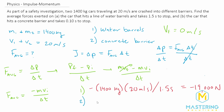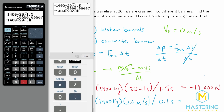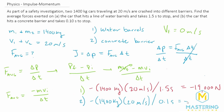For the concrete barrier, we have the same setup: negative 1,400 kilograms times the initial speed of 20 meters per second. The only thing that changes is the time — the time it took to slow down with the concrete barrier is only 0.1 seconds. That gives us negative 1,400 times 20 divided by 0.1, which is negative 280,000 newtons. So because the concrete barrier stops the car in a much shorter time, it results in a much higher average force of impact during the collision.